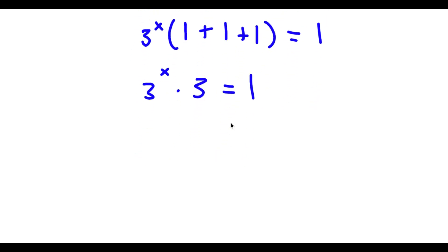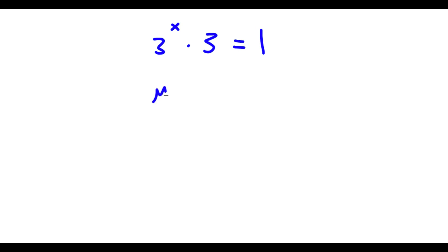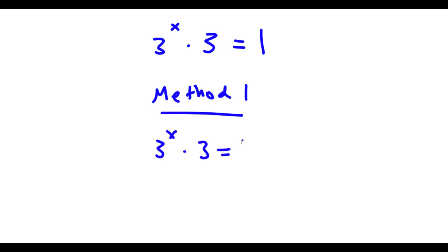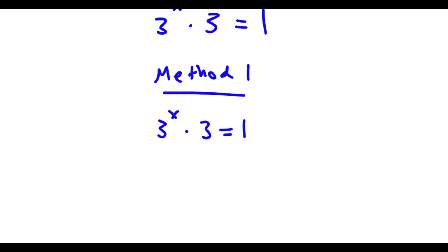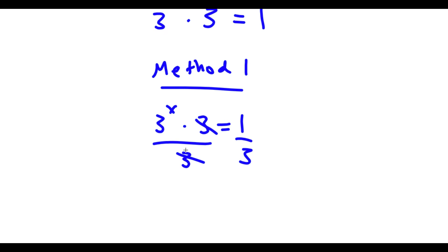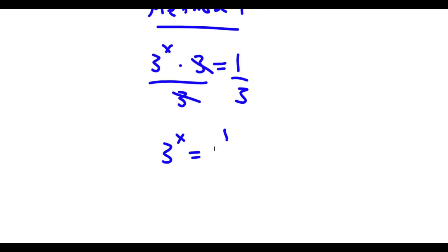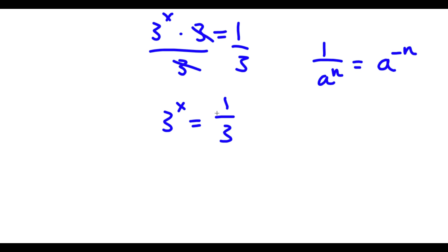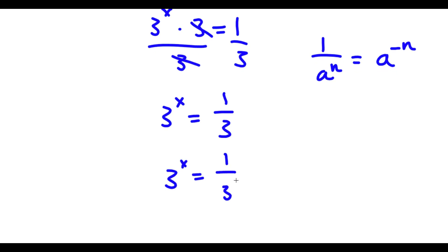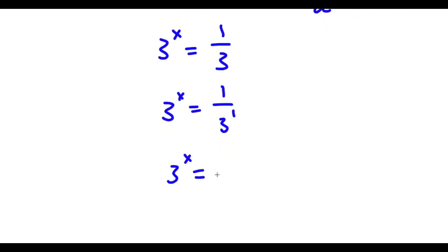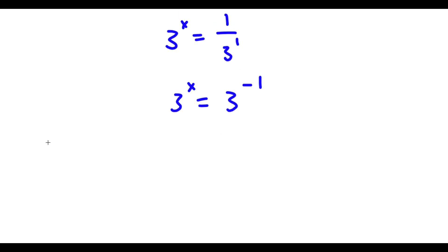Now, from here, I actually have two different methods to solving this problem. For method 1, start with 3 to the power of x times 3 is equal to 1. Now, I'm going to divide both sides by 3. So then these two cancel out, and I'm left with 3 to the power of x is equal to 1 over 3. Now, if I have something in the form 1 over a to the power of n, this is the same thing as a to the power of negative n. So in this case, this is the same thing as 1 over 3 to the power of 1, so I can rewrite this as 3 to the power of negative 1. And now, if a to the power of m equals a to the power of n, then m equals n. So in this case, x is equal to negative 1.